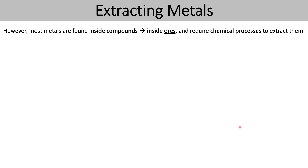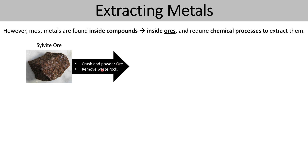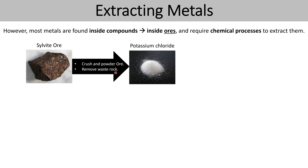Let's have a look at some examples of metals being extracted from their ores. Silvite ore is an ore that contains potassium. For it to be classified as an ore, it needs enough potassium for it to be economic to extract. The first stage in the extraction process would be to crush and powder the ore and then remove any waste rock, leaving us with potassium chloride. However, our goal is to obtain pure potassium, and currently the potassium is bonded to chlorine in the form of the compound potassium chloride.